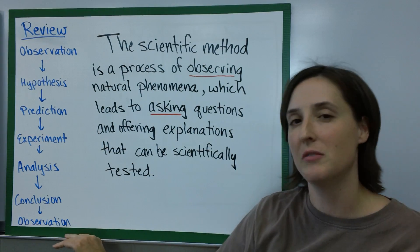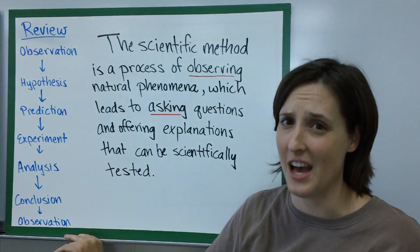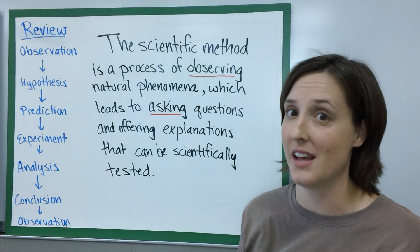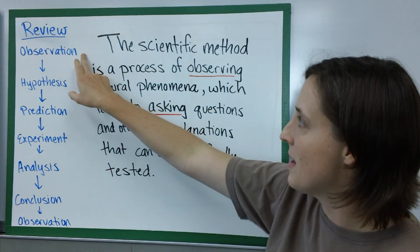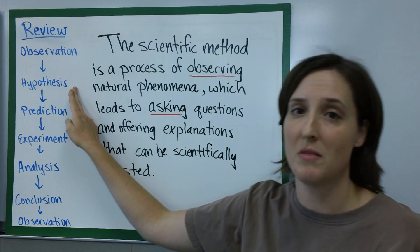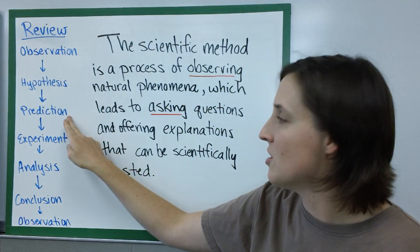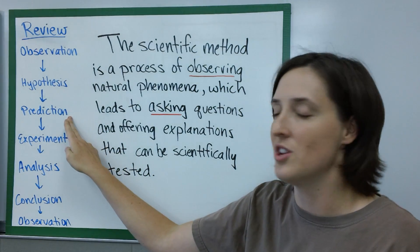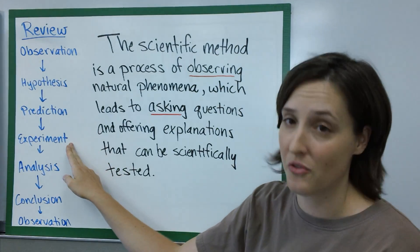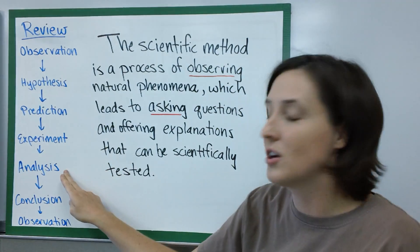For a little review, the basic steps—and by steps I mean this can be a cycle you can start anywhere—you make an observation, you come up with a hypothesis, you make a prediction as to what will happen when you perform an experiment, you perform the experiment.